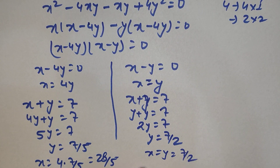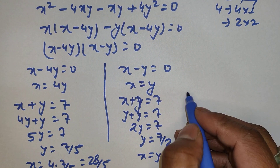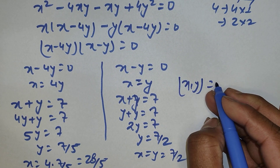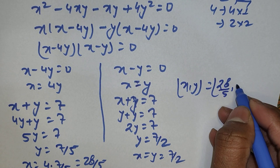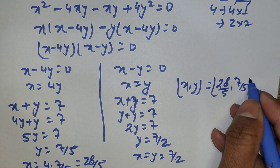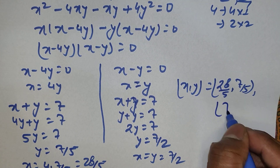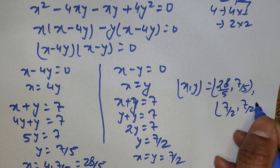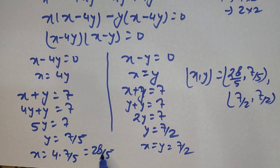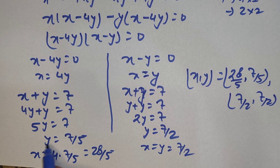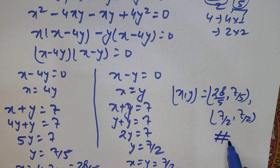So we have two sets of values for x and y. From the first case: x equals 28/5 and y equals 7/5. From the second case: x equals 7/2 and y equals 7/2. This is our final answer. Thank you.